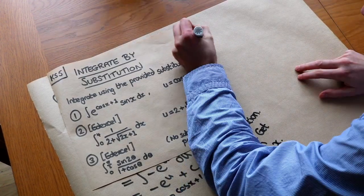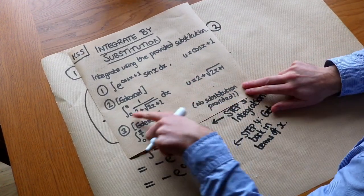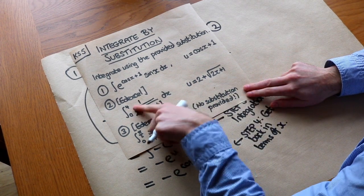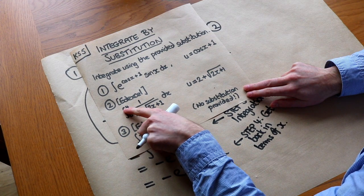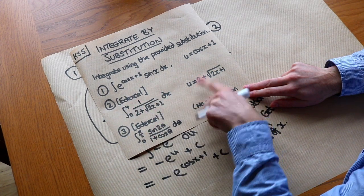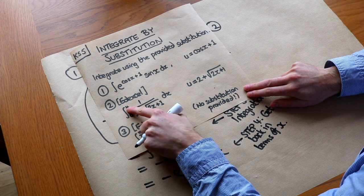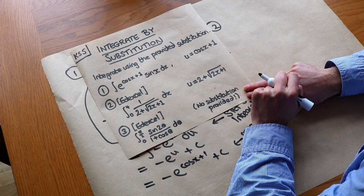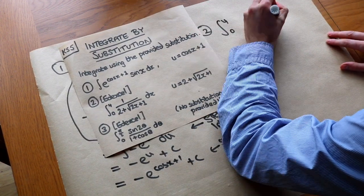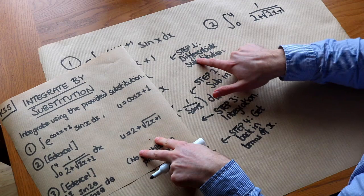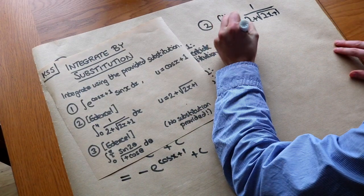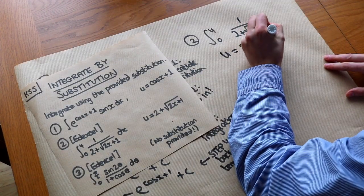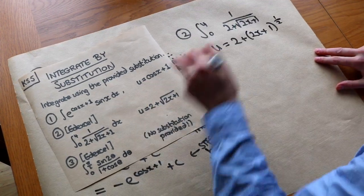Now let's try the next question. The difference here is that we have limits on our integral — x varies between 0 and 4. Since we want everything in terms of u, we have to change the limits by finding what values of u correspond to those values of x. Step 1: differentiate the substitution u equals 2 plus root(2x plus 1), written as 2 plus (2x+1) to the half so we can apply the chain rule.